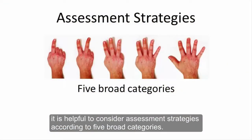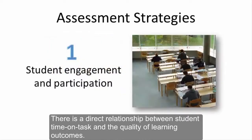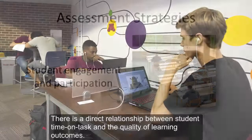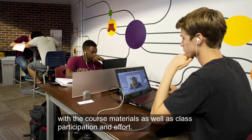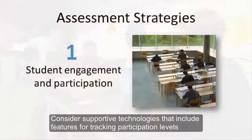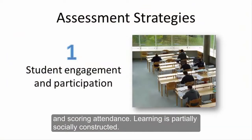When choosing an appropriate supportive technology, it is helpful to consider assessment strategies according to five broad categories. There is a direct relationship between student time on task and the quality of learning outcomes. Use these assessment strategies to help gauge the degree and quality of student engagement with the course materials, as well as class participation and effort. Consider supportive technologies that include features for tracking participation levels and scoring attendance.